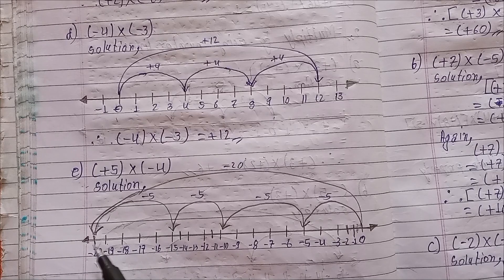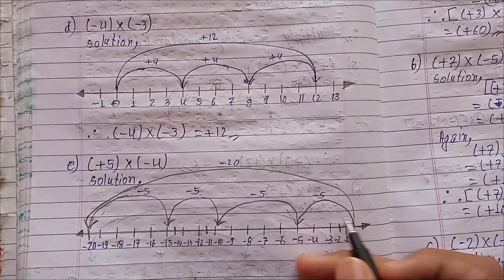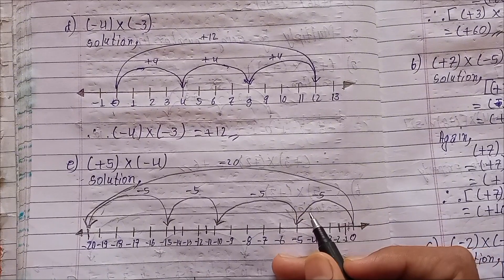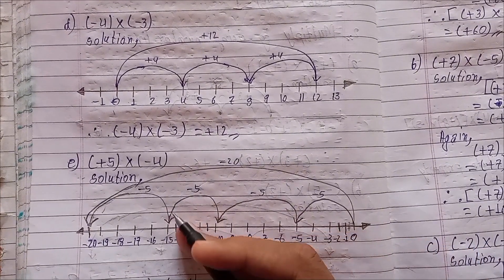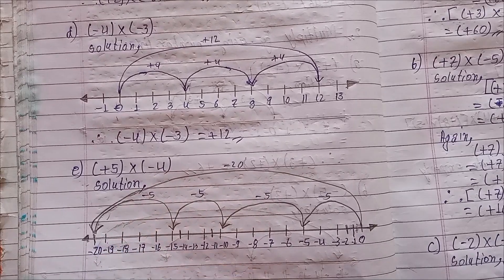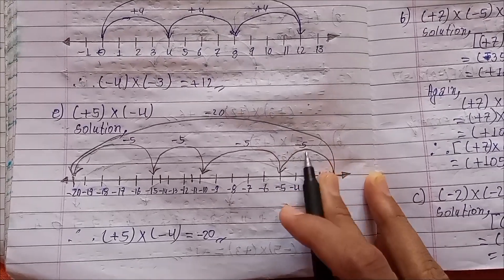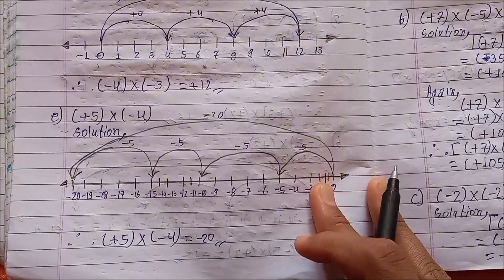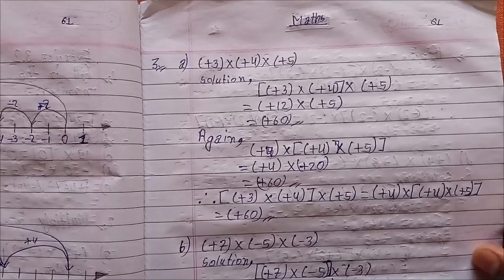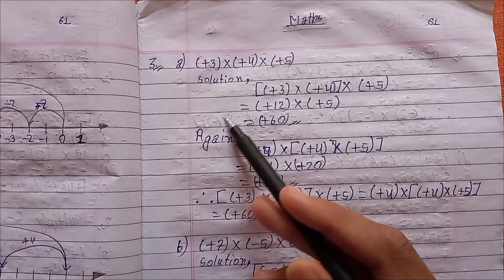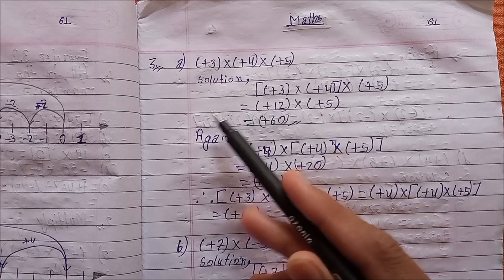Plus 5, moving steps one, two, three, four. Therefore, plus 5 multiplied by minus 4 equals minus 20. Number 3: (a) plus 3 multiplied by plus 4 multiplied by plus 5.